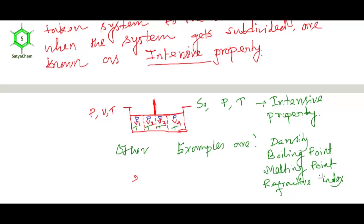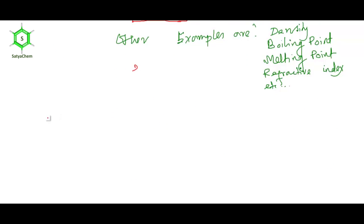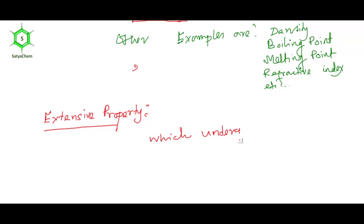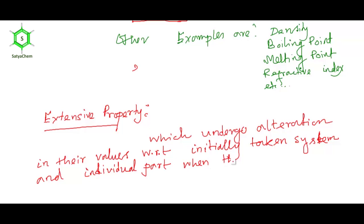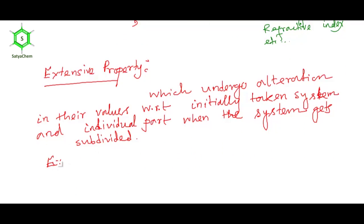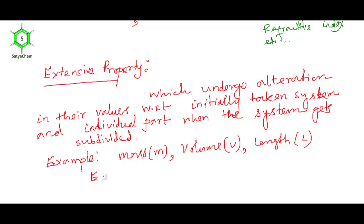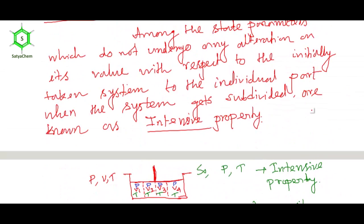Next: extensive property. Extensive properties are those which undergo variation in their values with respect to the initially taken system when the system gets subdivided. Examples of extensive properties are mass, volume, and length. Extensive properties are additive in nature, whereas intensive properties are non-additive — you cannot simply sum temperatures.